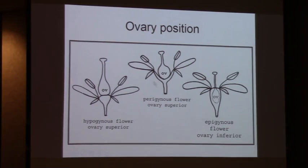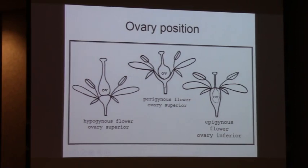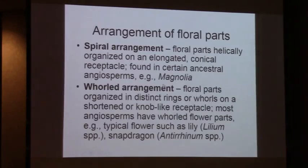Here we have a floral cup or hypanthium - this is what we find in many members of the rose family: roses, peaches, apples. It's a cup-shaped receptacle. In members of the evening primrose family, the floral cup is tubular, but still a hypanthium. Note that the ovary is elevated above, seated in the bottom of that cup-shaped receptacle, so technically it's superior. The flower is perigynous - the other flower parts are attached to the rim of the floral cup. Perigynous - peri meaning around the gynoecium.